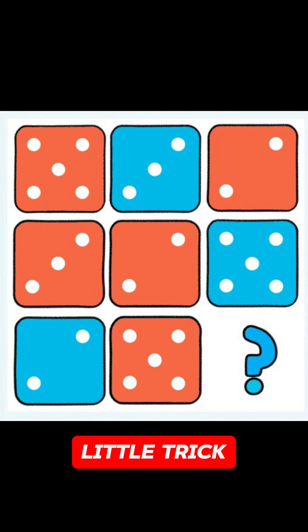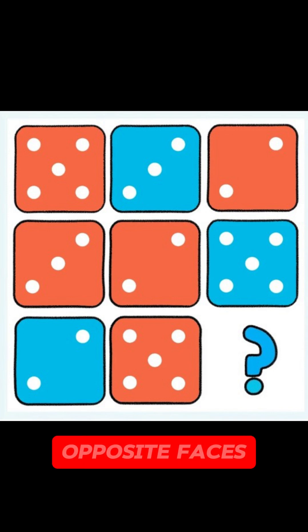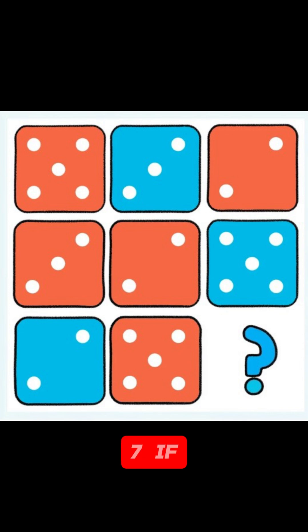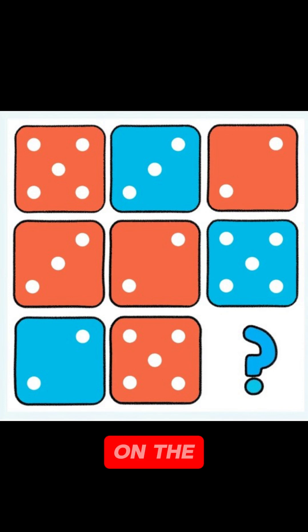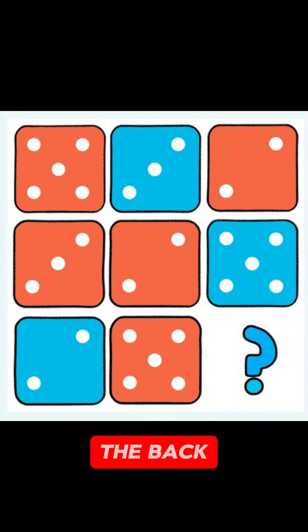Here's a little trick. On a standard die, opposite faces always add up to seven. If five is on top, then two must be on the bottom. And if six is on the front, one must be on the back.